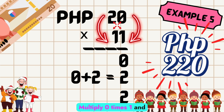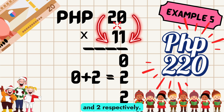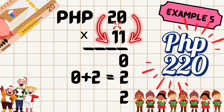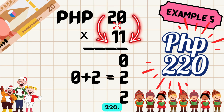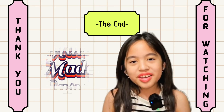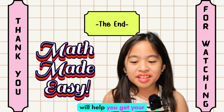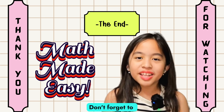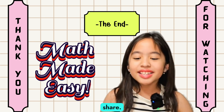Now following the middle diagram, multiply 0 times 1 and 2 times 1, which equals 0 and 2 respectively. Add these two together, and so the answer to 20 times 11 equals 220. There you go! I hope this technique will help you get your answers more quickly and love solving more math problems. Don't forget to subscribe, like, and share. See you later guys, bye!